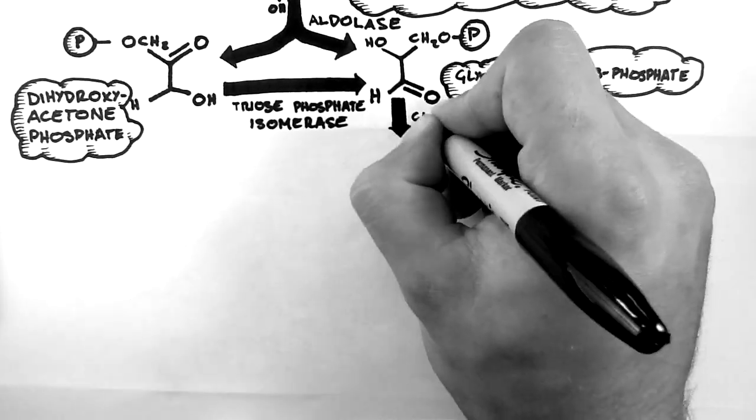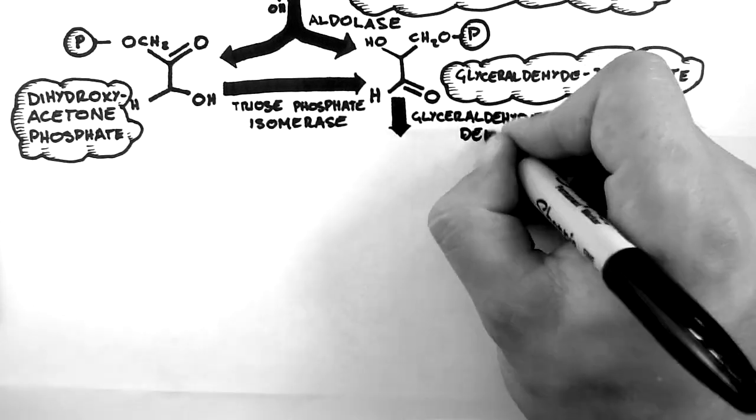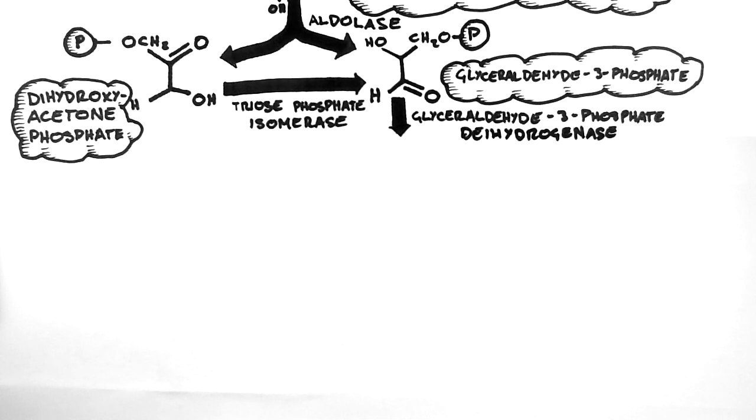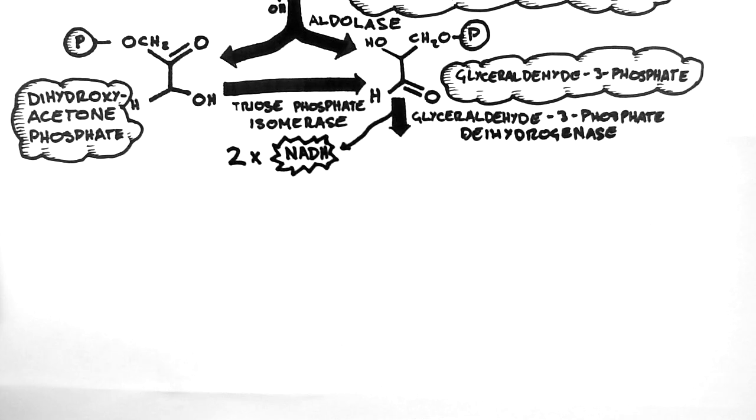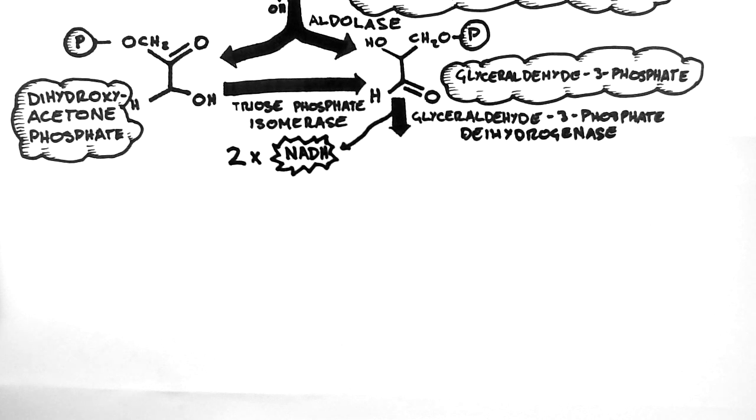The next enzyme we meet is glyceraldehyde 3-phosphate dehydrogenase. The dehydrogenases move a hydride ion, that is H-, onto an electron acceptor such as NAD+ or FAD. This is what happens here, creating two NADH. There are two molecules of NADH created because one glucose molecule created two glyceraldehyde 3-phosphate, one from the aldolase reaction and one from the triose phosphate isomerase reaction.